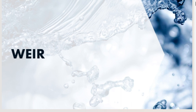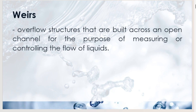Now let's move to the rectangular weir. This is a suppressed weir, where the length at the bottom equals the length at the top. Considering a differential area dh × L located h meters from the surface, and applying orifice theory — where v = √(2gh) — we set up an integration process.